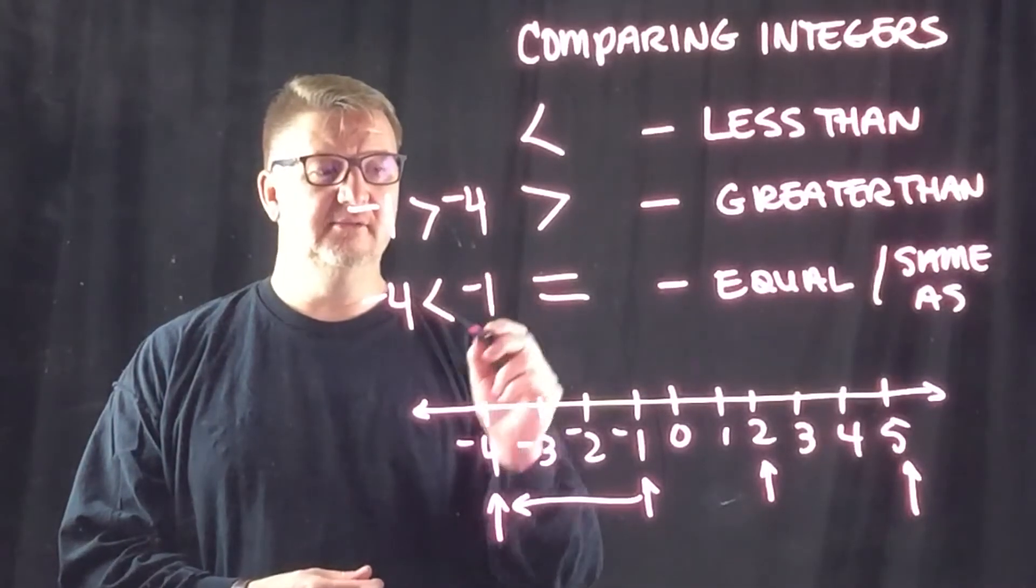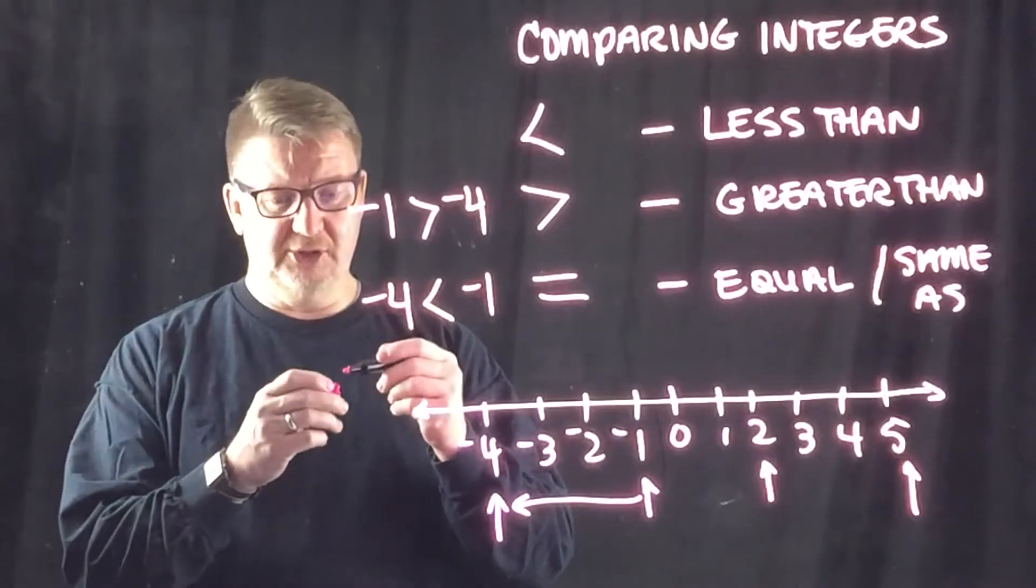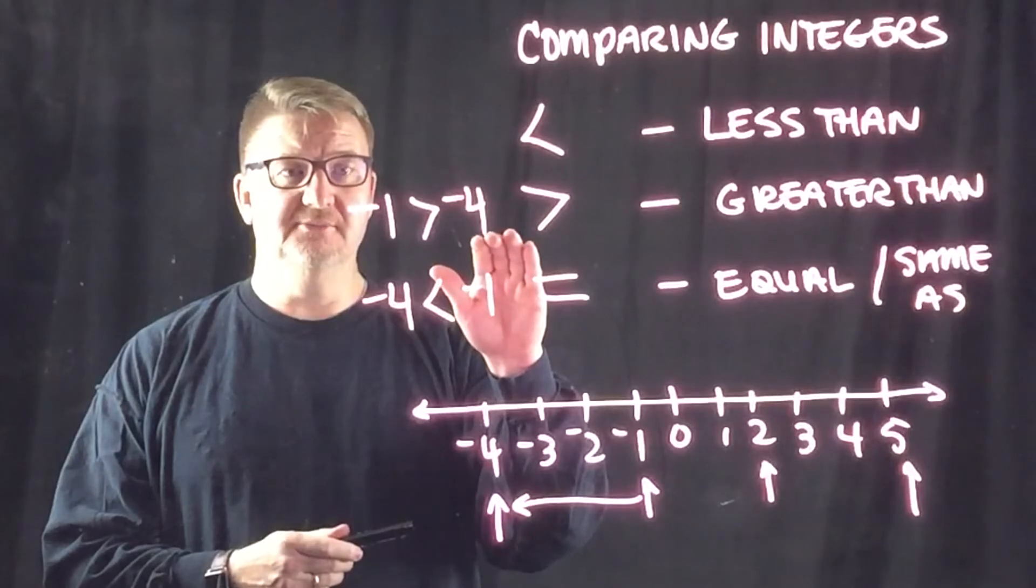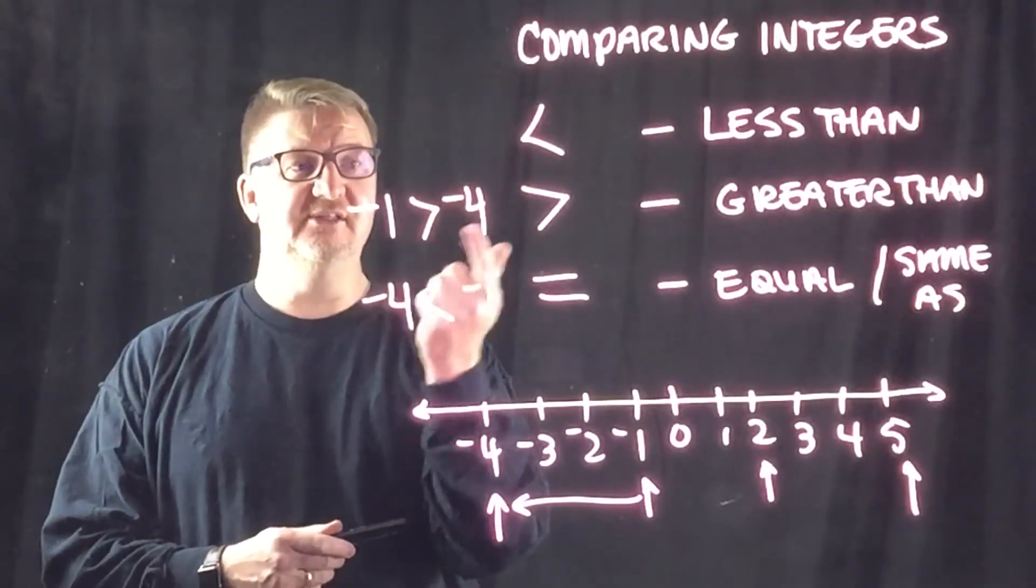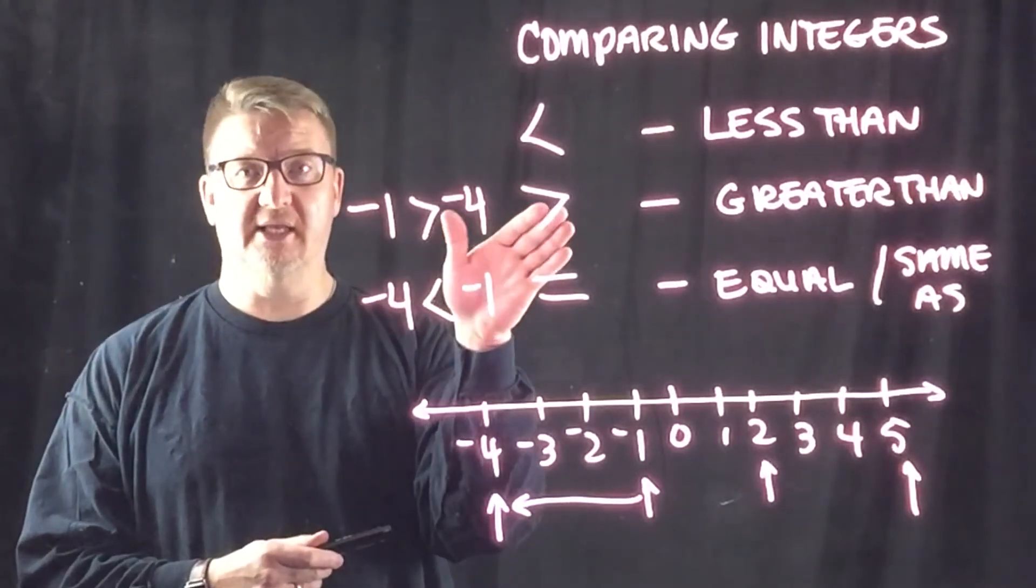Now when you're making these comparisons, you just want to make sure that you write it from the left to the right like a sentence, and that's the way you read it. You would never see this sentence and say negative four is less than negative one. You would always read it left to right like in a book.